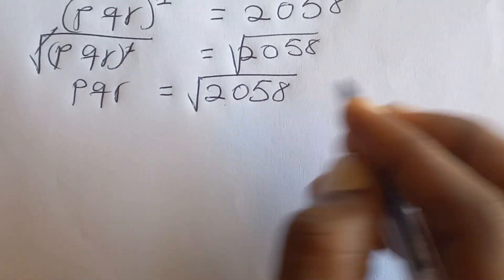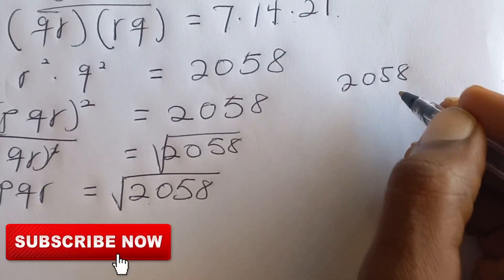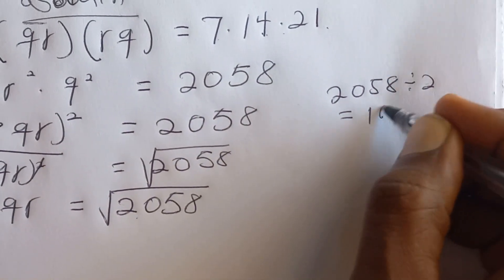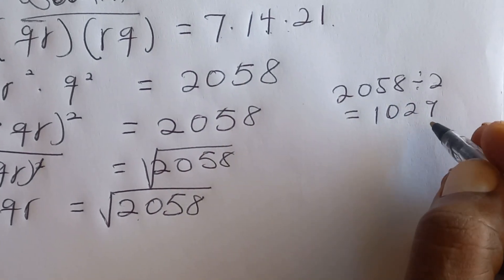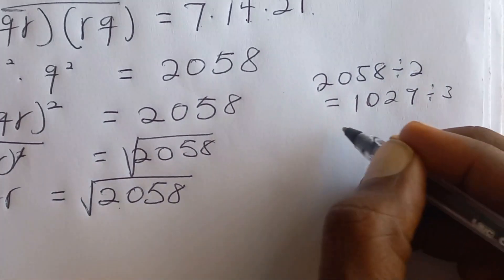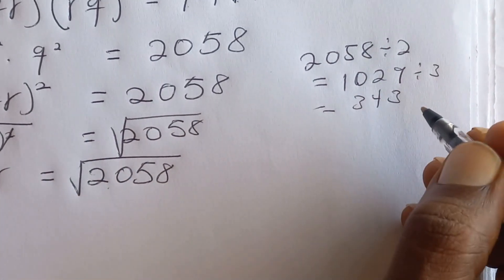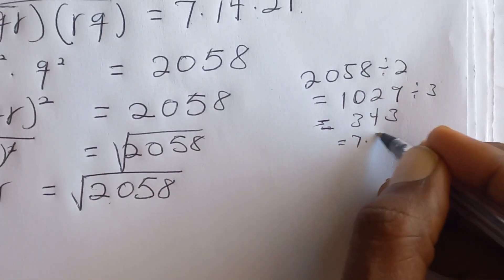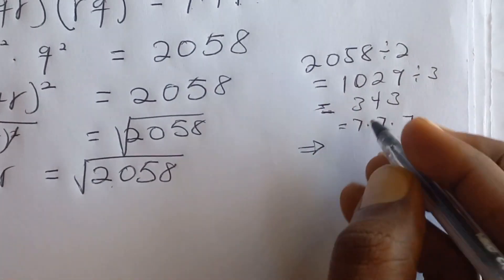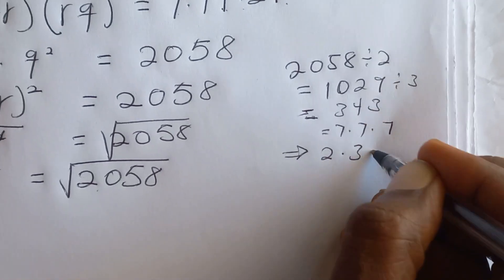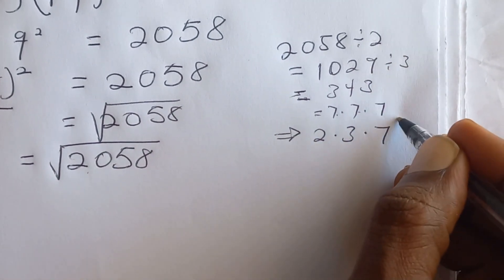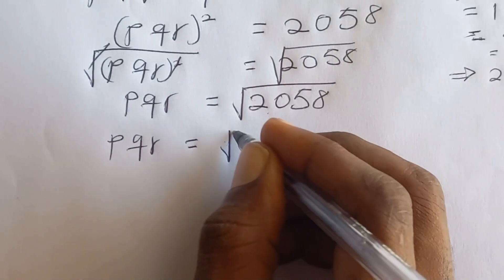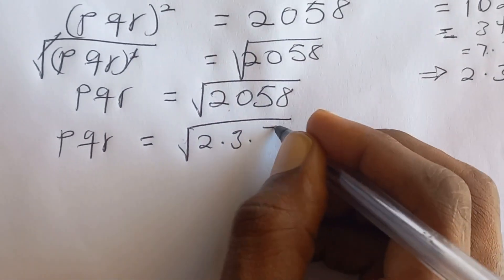Now we need to simplify 2058. Since it's even, we divide by 2 to get 1029. Then 1029 divides by 3 to give 343. And 343 factors as 7 times 7 times 7, which is 7 cubed. So we have 2058 equal to 2 times 3 times 7 cubed. Therefore PQR equals the square root of 2 times 3 times 7 cubed.